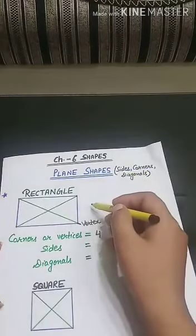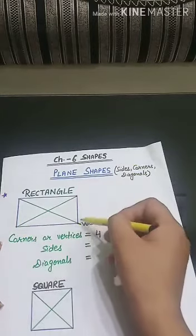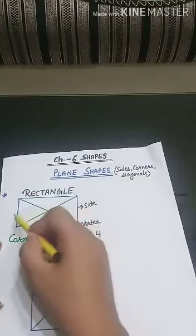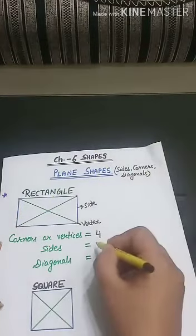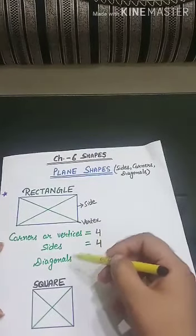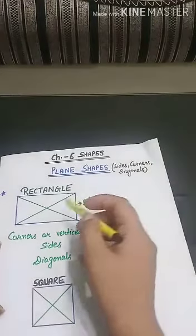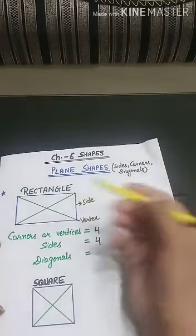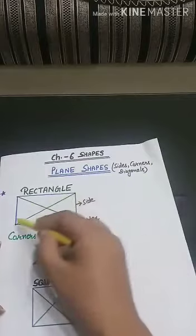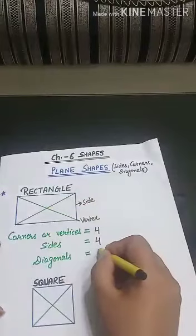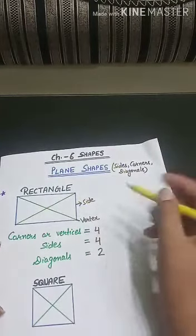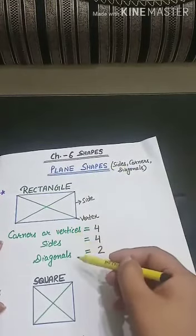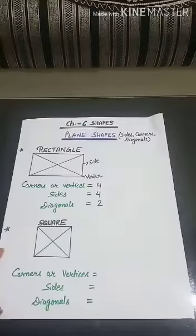How many sides does a rectangle have? Sides are the lines joining the vertices. One, two, three and four — a rectangle has four sides. Now, what are diagonals? Diagonals are the lines joining the opposite vertices of plane shapes. So how many diagonals does a rectangle have? One and two — two diagonals. If you measure these diagonals, you will find that both diagonals are equal in length. So a rectangle has four corners, four sides and two diagonals.